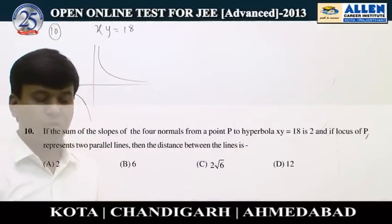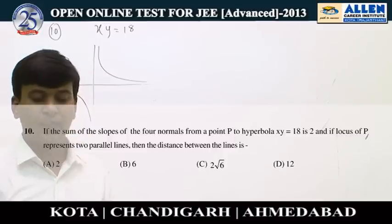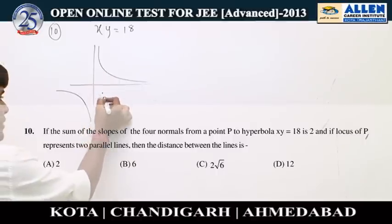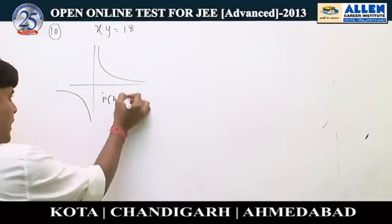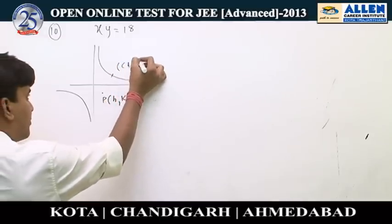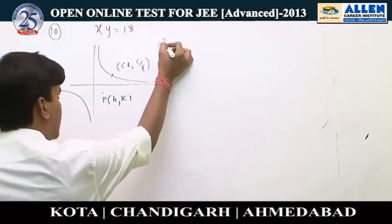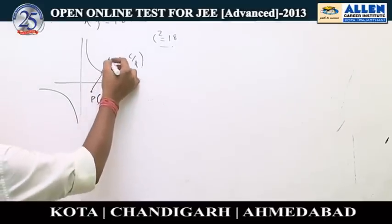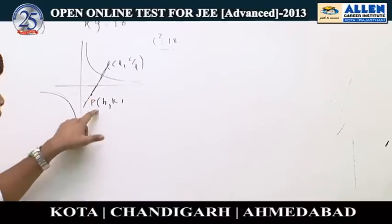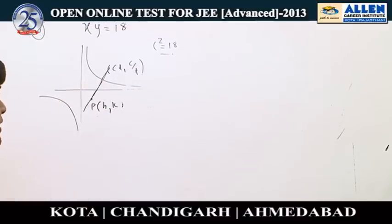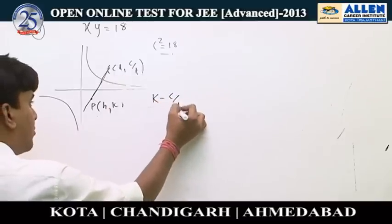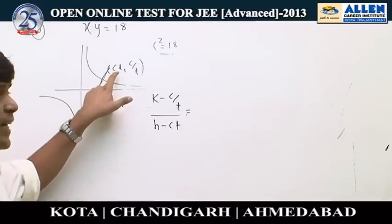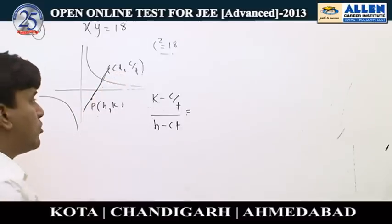In question number 10, the sum of slopes of four normals from point P to a hyperbola is 2, and we must find the locus of P. Taking P as (h, k) and a general point on the hyperbola as (ct, c/t) where c² equals a, the slope of the normal at that point using parametric differentiation is t².